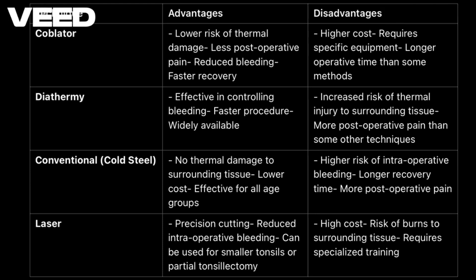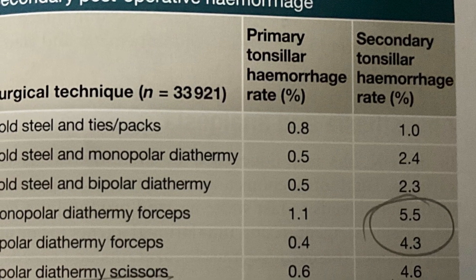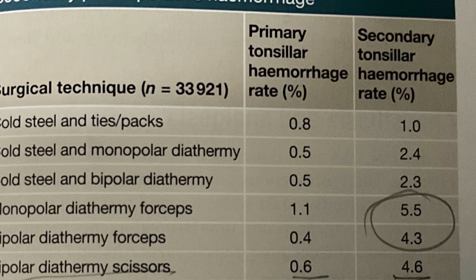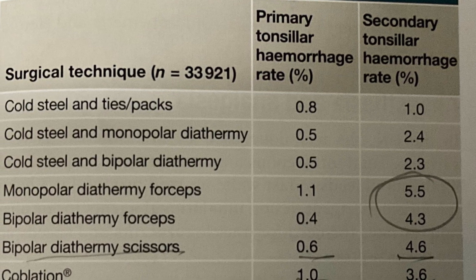Each technique has its unique strengths and is suited to different patient needs. Coblation and cold steel tonsillectomies are often preferred due to their balanced benefits of lower pain and controlled bleeding. For cases where bleeding control is critical, diathermy and radiofrequency are reliable. Ultimately, the best choice depends on the individual patient, their pain tolerance, and the surgeon's expertise with each method.